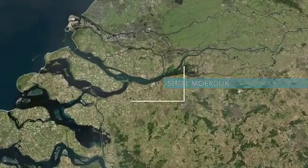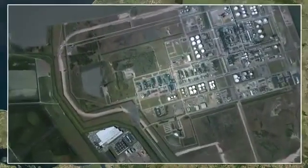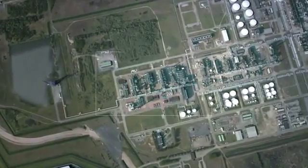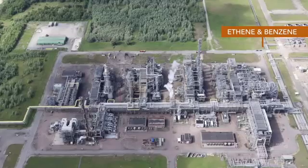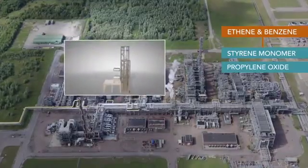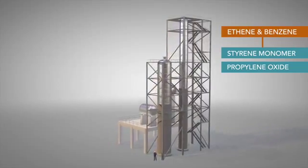At the plant in Moordyke, Shell produces chemicals from oil and gas. In this installation, ethane and benzene are used to produce styrene monomer and propylene oxide. These products are used in styrofoam, food, cosmetics and pharmaceuticals.